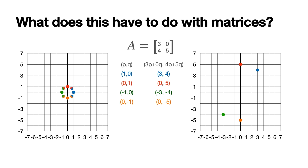We can map a few more points, like these four, which get mapped to these four. As you can see, on the left we can draw a unit circle, which gets mapped on the right to this ellipse. In general, every 2×2 matrix will define a linear transformation that sends the unit circle on the left to some ellipse centered at the origin on the right, and that ellipse defines the linear transformation.